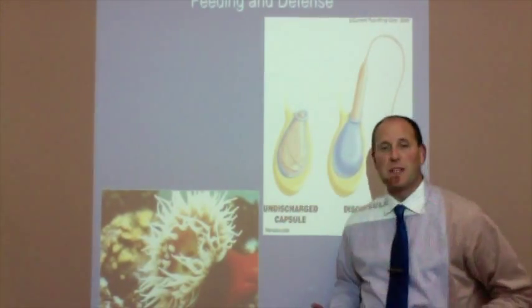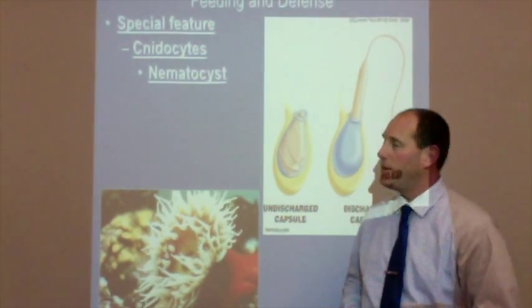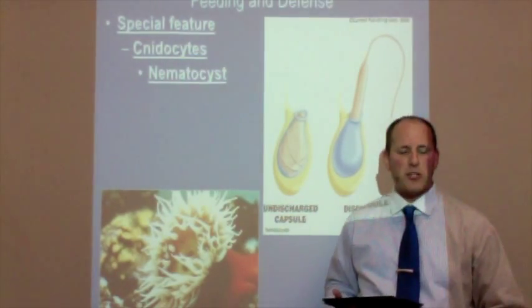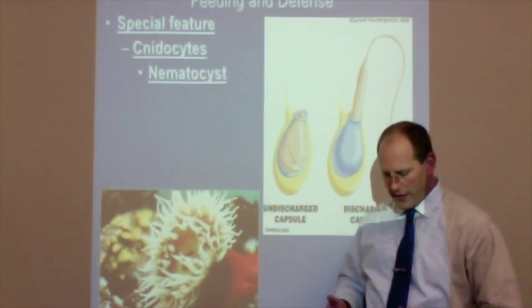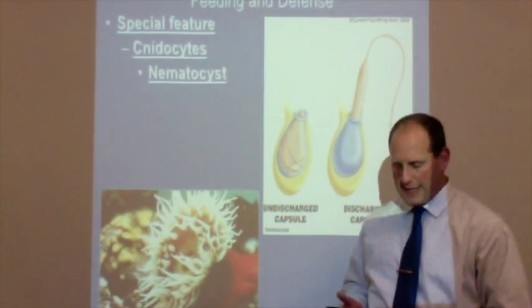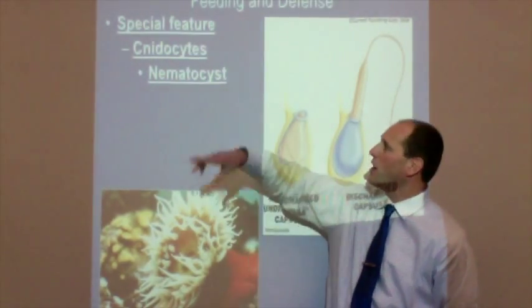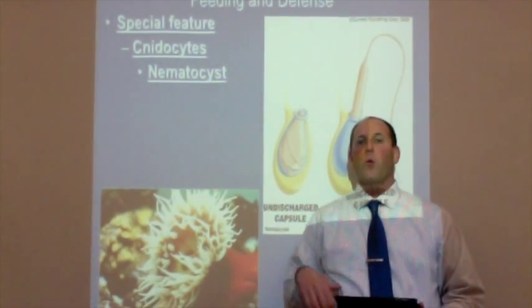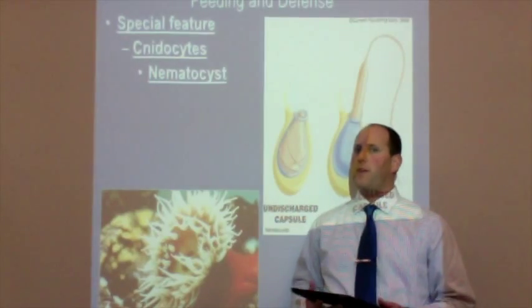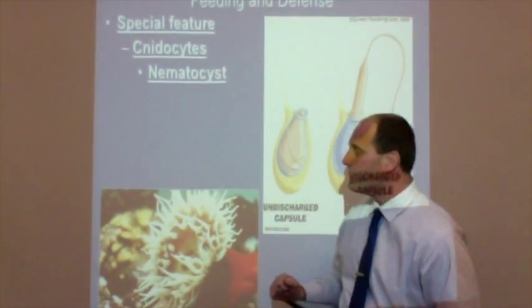Some unique structures relate to their feeding and defense mechanisms. Their special feature is called a cnidocyte — C-N-I-D-O-C-Y-T-E-S — a special type of cell used in feeding and defense. Inside that cell is an organelle unlike any other, called a nematocyst. The nematocyst is inside the cnidocyte cell; there's a hair-like trigger on the side, and when that trigger is touched by another organism, the nematocyst discharges — it shoots out of the cell.